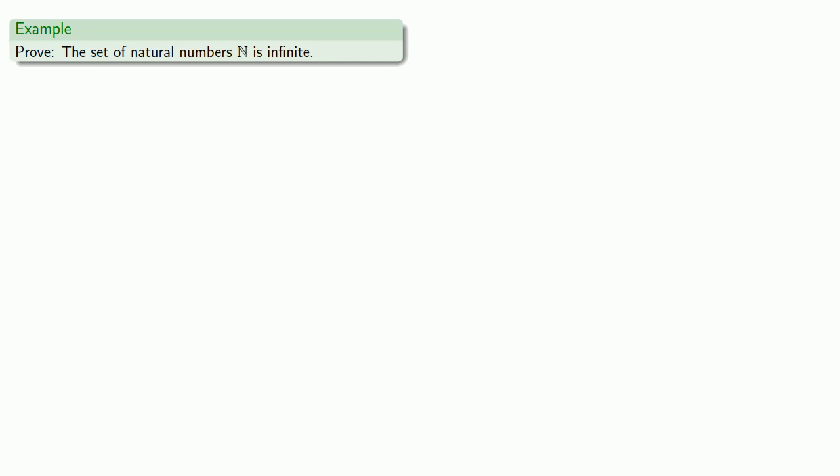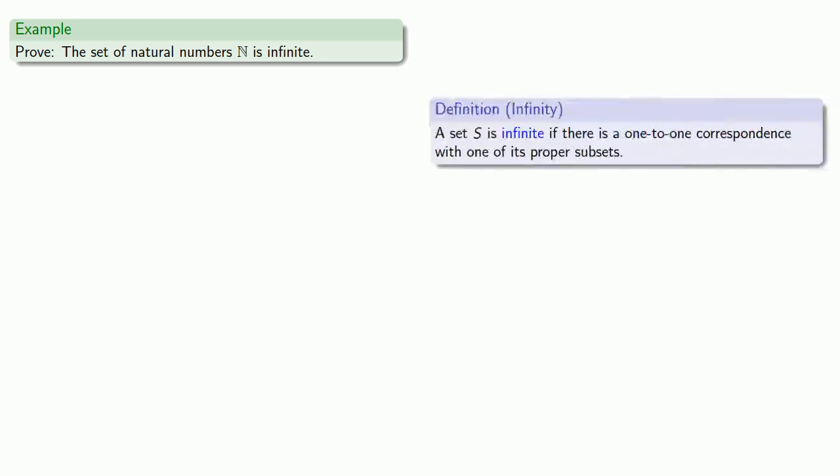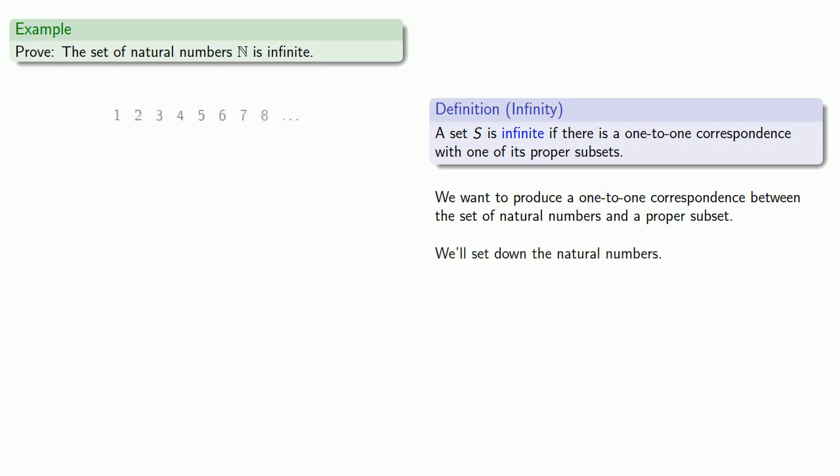Definitions are the whole of mathematics. All else is commentary. And we want to produce a one-to-one correspondence between the set of natural numbers and a proper subset. So we'll set down the natural numbers. Wait a minute. The natural numbers by the Peano axioms include zero.